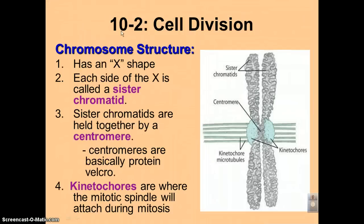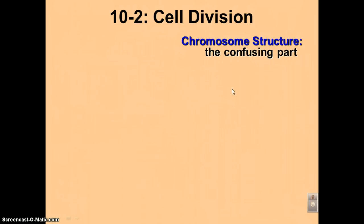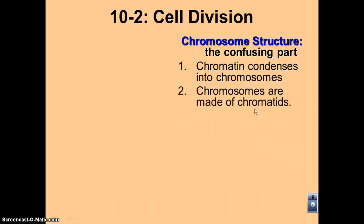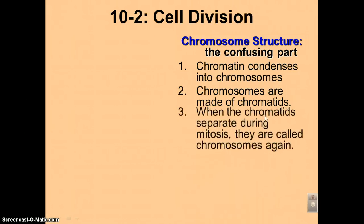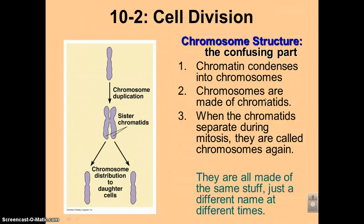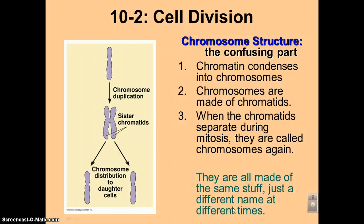Sister chromatids are exact copies of each other. Make sure you study this diagram — it will show up on your worksheets and on quizzes and tests. Now, chromosome structure is very confusing because you have chromatin, chromatids, and chromosomes. They're all made out of the same stuff; that's why they sound the same. They just get different names at different times. Chromatin is long and thin — think of a long piece of yarn. When you coil it up into a ball, that's a chromosome. Chromosomes are made up of chromatids, and chromatids are made up of chromatin. When the chromatids separate during mitosis, you have to call them chromosomes again. They're all made of the same stuff; they just get a different name at a different time.